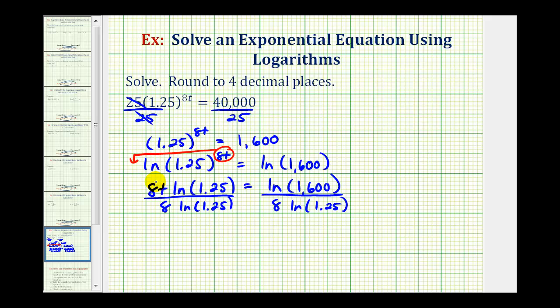Looking at the left side, 8 divided by 8 is equal to 1. Natural log 1.25 divided by natural log 1.25 simplifies to 1. So we're left with t, and now we'll have to go to the calculator to get a decimal approximation for this quotient here.